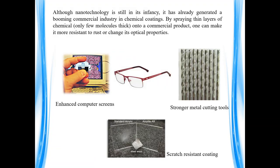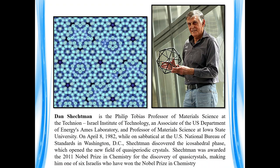Although nanotechnology is still in its infancy, it has already generated a large and booming commercial industry. In chemical coatings for materials, by spraying a thin layer of chemicals onto commercial products one can make them more resistant to rust, change their optical properties, produce enhanced computer screens, stronger metal-cutting tools, and scratch-resistant coatings.